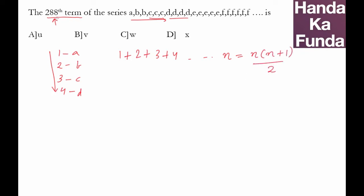I need to get close to 288. How do I do that? Let me take N as 24. Why? Because 24 into 25 would be an easy calculation, and I know it will be around 288. So 24 into 25 by 2 gives me 12, so 300. By the time we get to the 24th letter, 300 will be consumed.